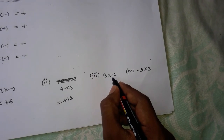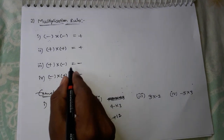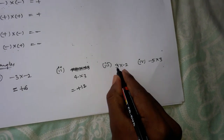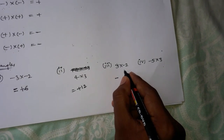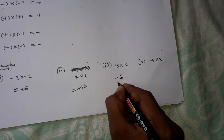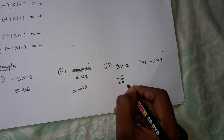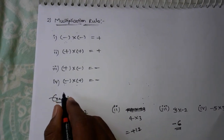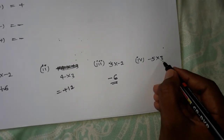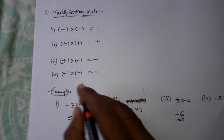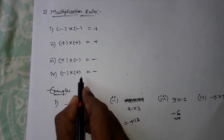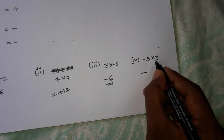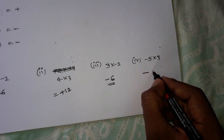Plus into minus is minus. Example: minus 3 into 2 is 6, so the answer is minus 6. Next: minus 5 into 3 — minus into plus is minus, so minus 5 into 3 is 15, and the answer is minus 15.